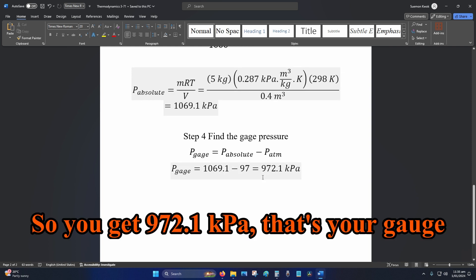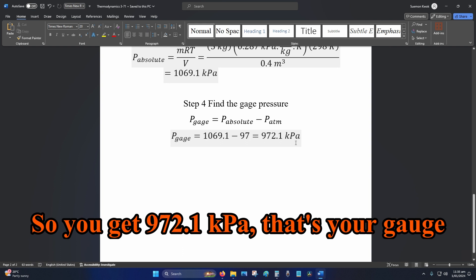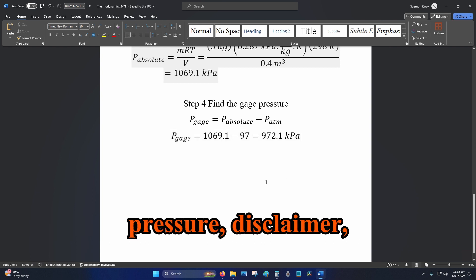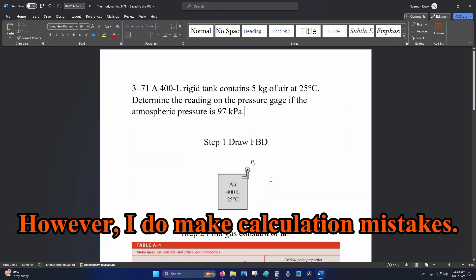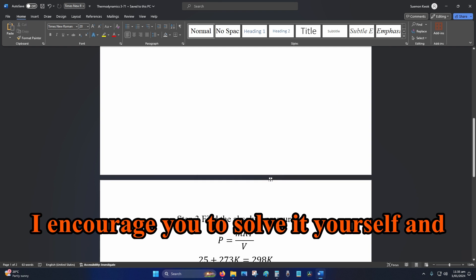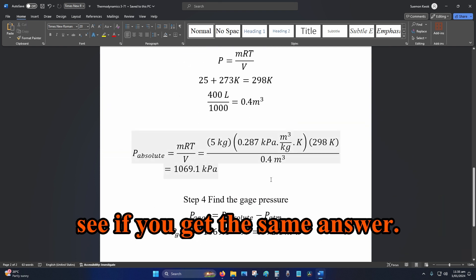So you get 972.1 kPa, that's your gauge pressure. Disclaimer: the method is correct however I do make calculation mistakes. I encourage you to solve it yourself and see if you get the same answer.